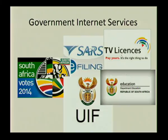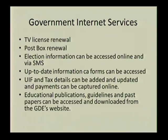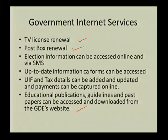Another thing that's come out of this technology is government internet services. There are lots of things we can do online: we can pay our TV licenses, file our tax returns, renew our post boxes, access information about elections, get up-to-date information, capture unemployment and tax details online, access educational publications and guidelines, and print out past papers. All these have made our lives easier and services more accessible.